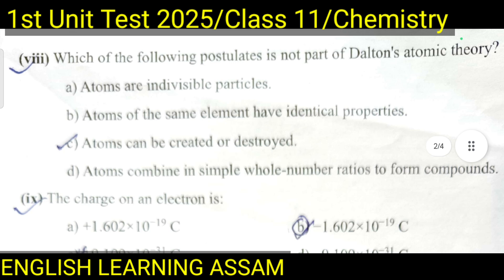Question number eight: Which of the following postulates is NOT part of Dalton's atomic theory? A. Atoms are indivisible particles. B. Atoms of the same element have identical properties. C. Atoms can be created or destroyed. The answer is C — atoms can be created or destroyed, which is not part of Dalton's theory.